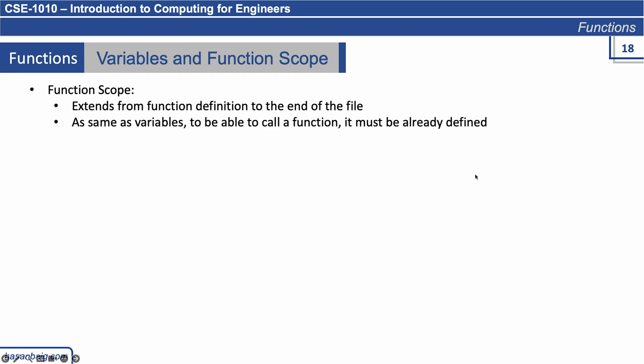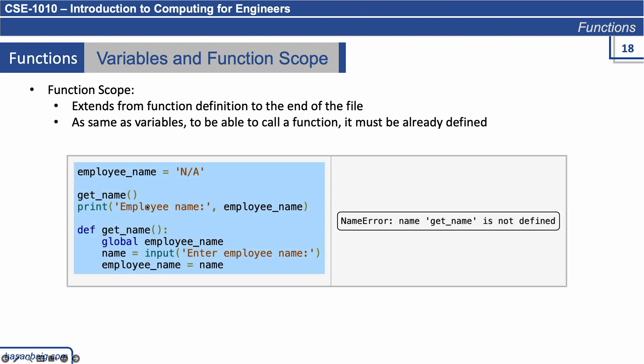Variable function scope extends from the function definition to the end of the file. Just as we have a scope of a variable, we also have a scope of a function. You cannot call a function that is not yet defined. Python reads code from top to bottom: if you try to call get_name before it is defined, Python will throw an error saying get_name is not defined. So before making a call, the function's definition must already be defined above that call.